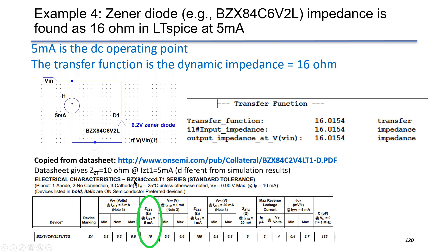LTSpice gives about 16 ohms for the transfer function. If we look at the datasheet at 5 mA, the Zener impedance is given about 10 ohm.